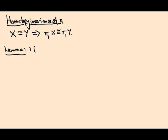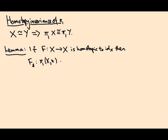I need to prove that if f is a continuous map from X to X and it's homotopic to the identity map on X, then the induced map on fundamental group going from π₁(X,x) to π₁(X,f(x)) is an isomorphism.